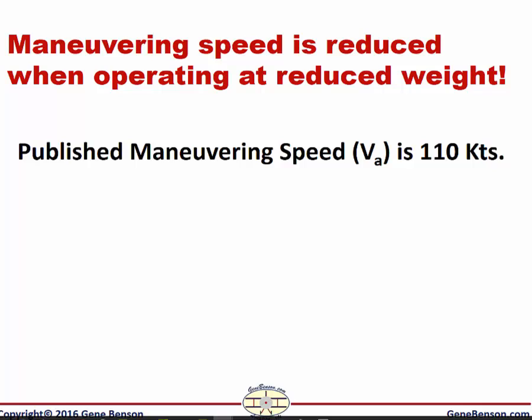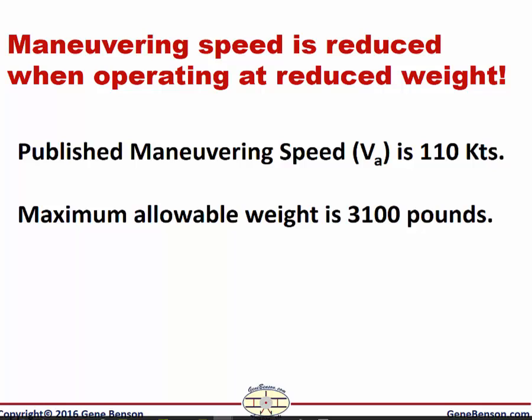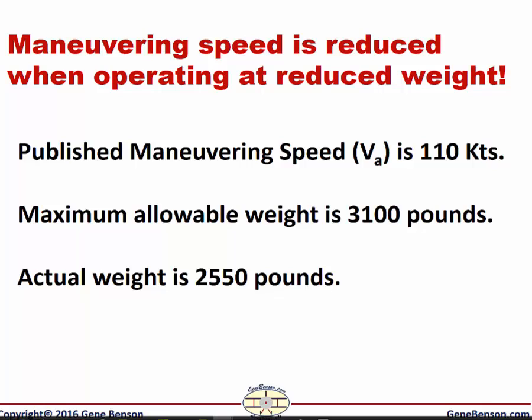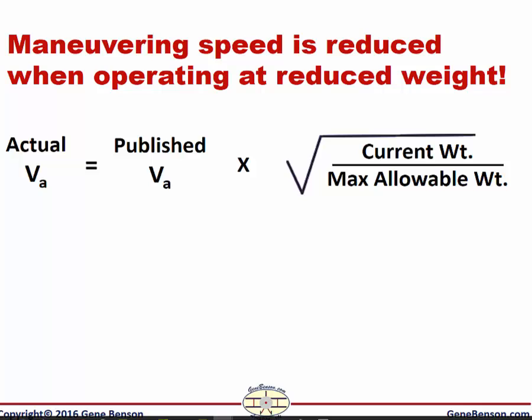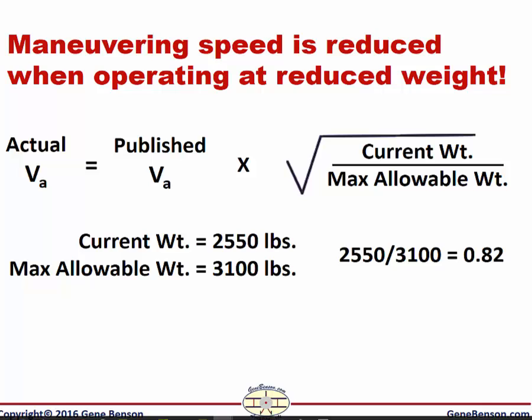We will use an example of an airplane that has a published maneuvering speed, V-A, of 110 knots. Our airplane has a maximum allowable weight of 3,100 pounds, but today we are operating at only 2,550 pounds. What is the V-A for our flight? Here is the formula: we divide our current weight by our maximum allowable weight and take the square root of that quotient, then multiply the value by our published maneuvering speed. So we divide 2,550 by 3,100 to get a quotient of 0.82.